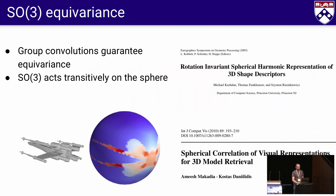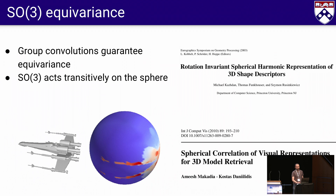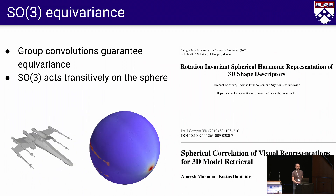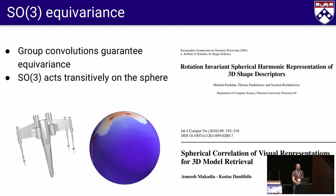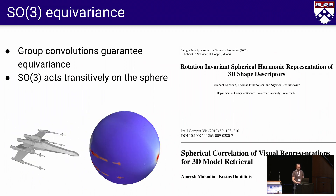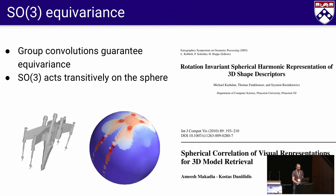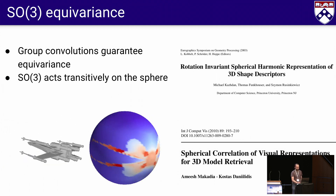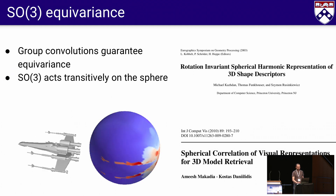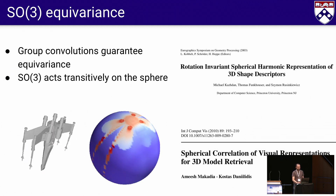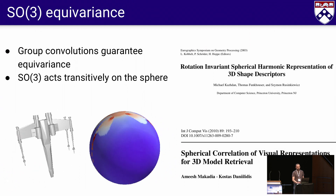The sphere is a quotient space of SO3, so we can define spherical convolutions that are equivariant. The inputs, filters, and feature maps of our network are all spherical. When dealing with 3D shapes, we first map them to the sphere by raycasting, as shown in the animation. This idea has been used for 3D shape analysis before.